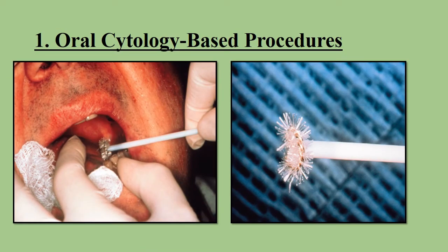We have many types of biopsy. The first is oral cytology, which is a non-surgical method. It is a test used to obtain cells from the surface of the lesion — no anesthesia is needed. There are two types: exfoliative or brush cytology. The brush cytology is most commonly used: we rotate a brush with firm pressure about 5 to 10 times on the surface of the lesion, then place it in a glass tube and send it to the pathologist.